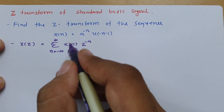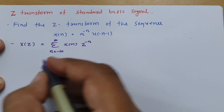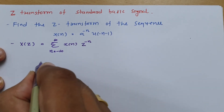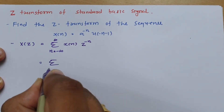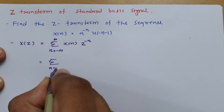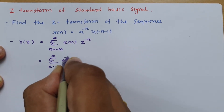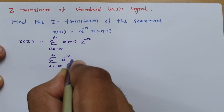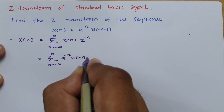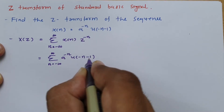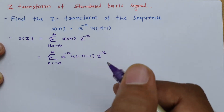Now let us substitute this x(n) into the equation. If we put x(n) in the formula, we get the summation from n = -∞ to ∞ of a^(-n) · u(-n - 1) · z^(-n).